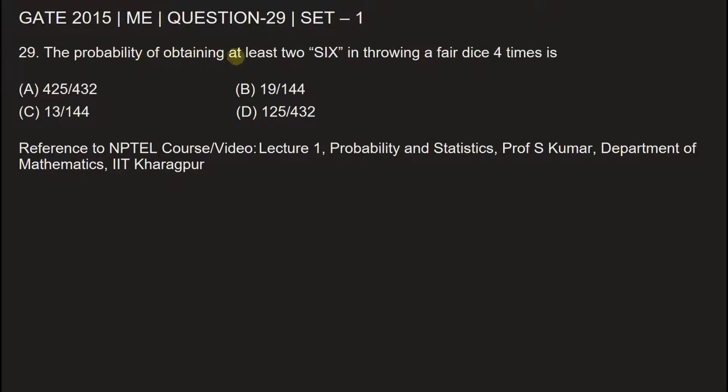The probability of obtaining at least two sixes in throwing a fair dice four times. We are throwing the dice, a fair dice, four times, so n is equal to four, the number of times the dice is thrown. Let p be the probability of obtaining the number six.